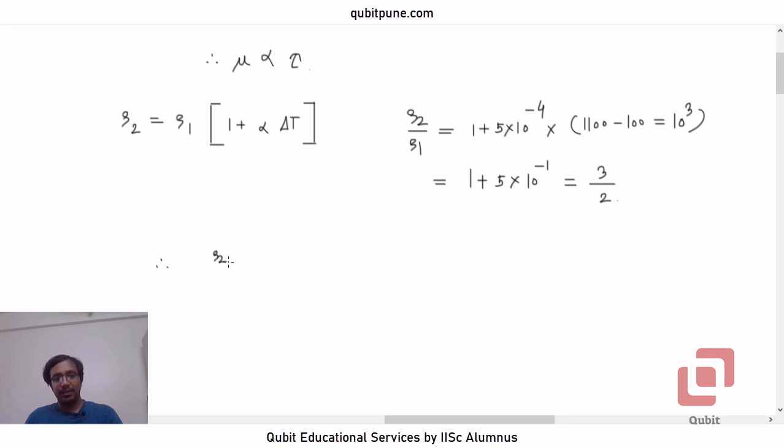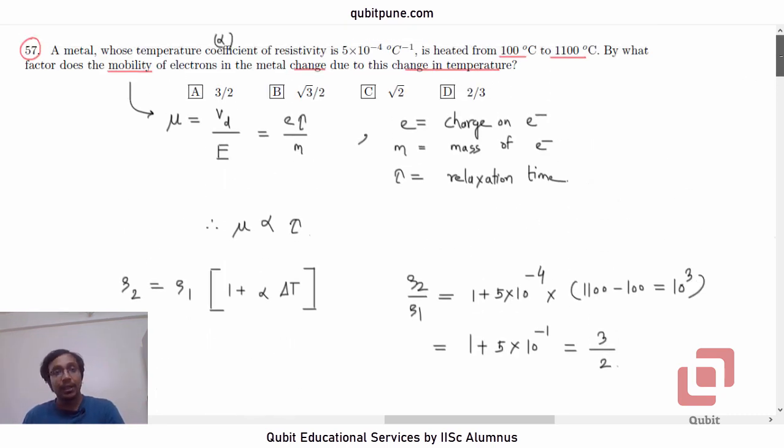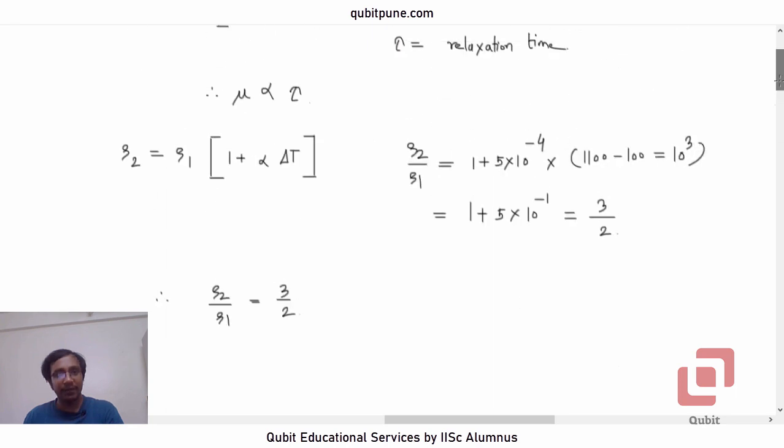Clearly, the resistivity will be greater. And we know that for metals, the resistivity actually increases with temperature, and the conductivity decreases. Now, we need to combine the two results that we have obtained so far.